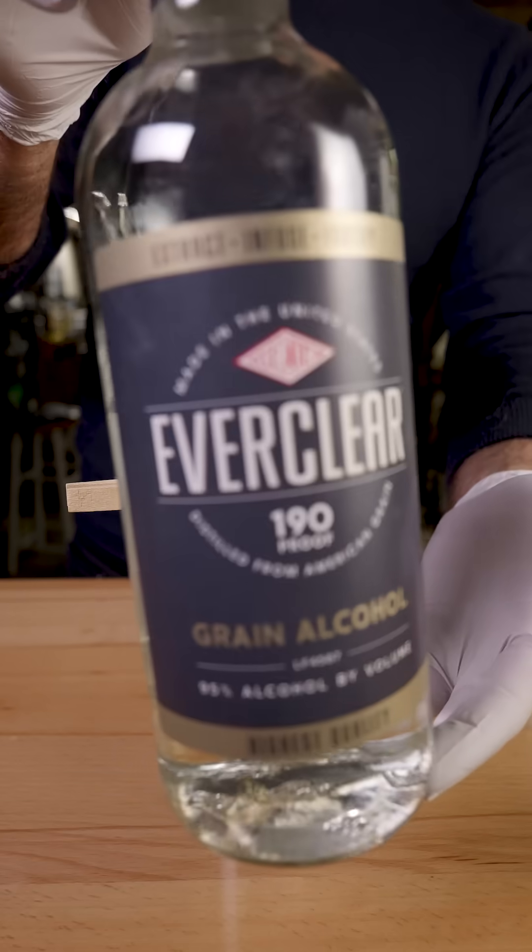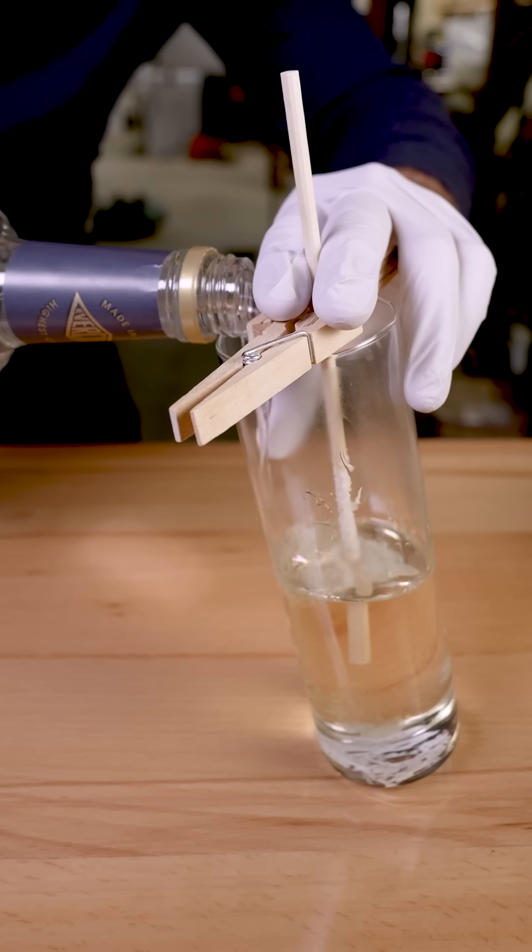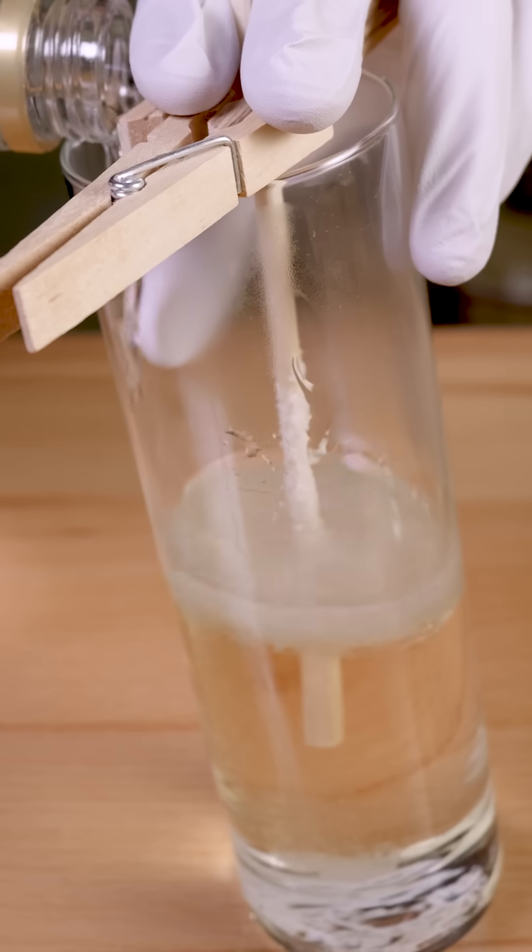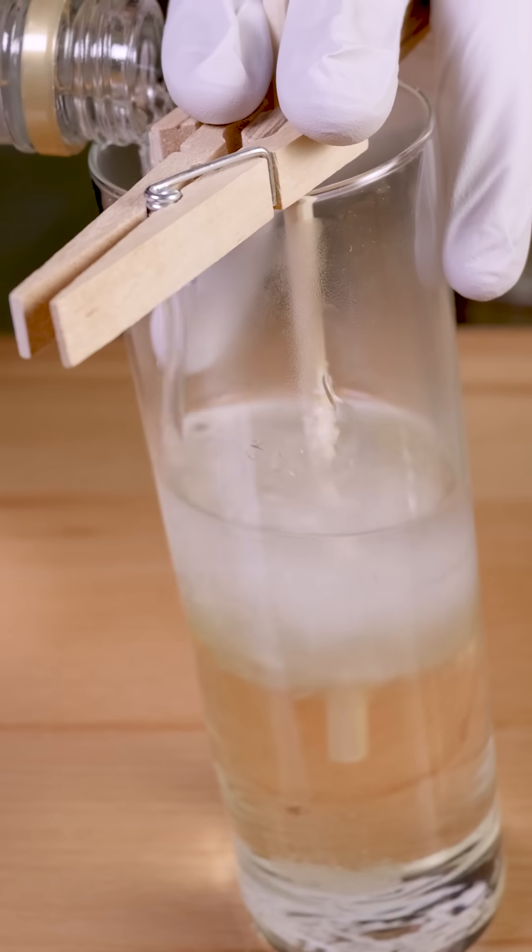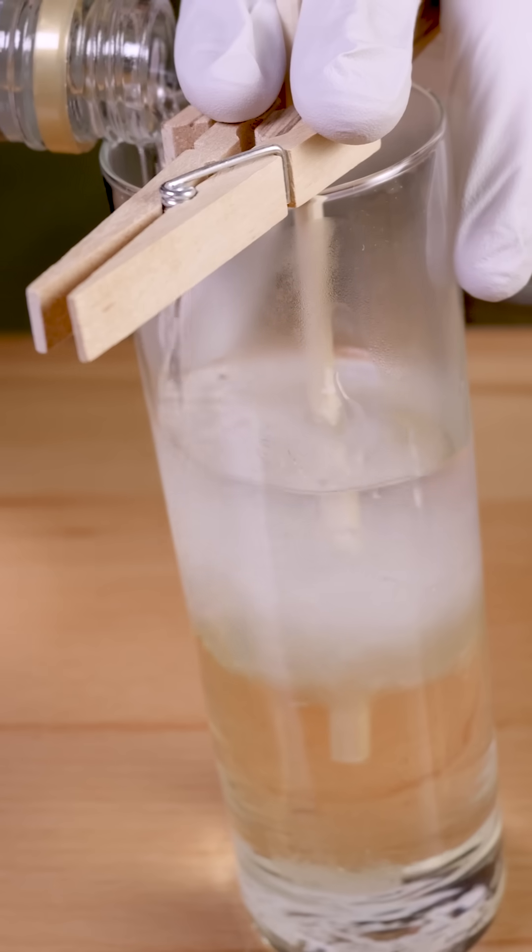So I'm going to fix this problem using Everclear. The more ethanol I add, the more it should hydrogen bond to water, which should pull that water away from hydrogen bonding to sugar, which should make the sugar crystallize out of solution.